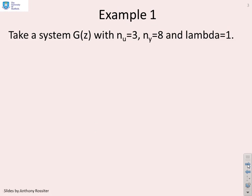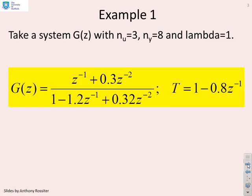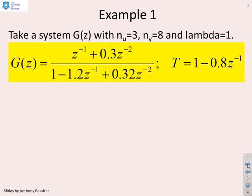First example: we're going to take a simple system G with some arbitrary choices of control horizon, output horizon, and control weighting.